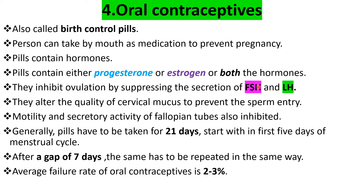FSH is responsible for follicular development, and Luteinizing hormone is responsible for ovulation. When these pills enter the body, the suppression of FSH and LH hormones is done, and because of that reason ovulation cannot happen.